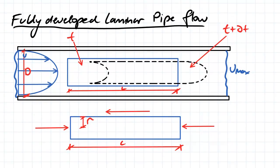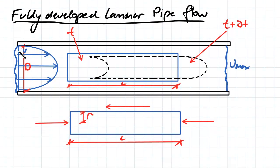So here we've got fully developed laminar flow in our pipe. You can see the velocity distribution is parabolic.